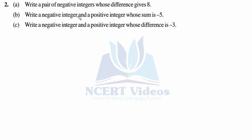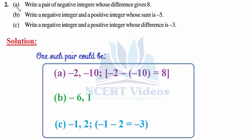Question 2, part b: Write a negative integer and a positive integer whose sum is minus 5. Part c: Write a negative integer and a positive integer whose difference is minus 3. For part a, let's take minus 2 and minus 10. We subtract; putting minus 10 in brackets, minus minus becomes plus, so minus 2 plus 8. Since signs are different we subtract and the sign comes from the greater number, giving plus 8.